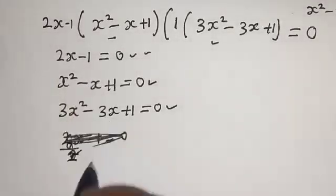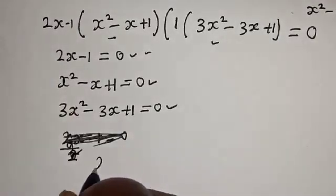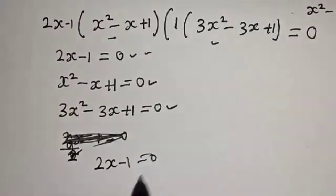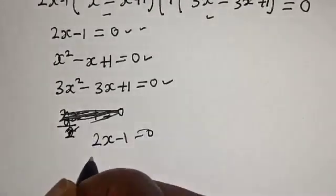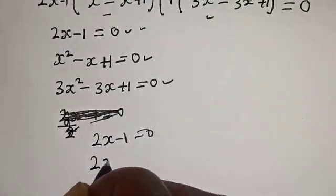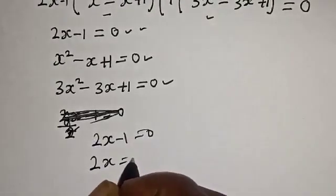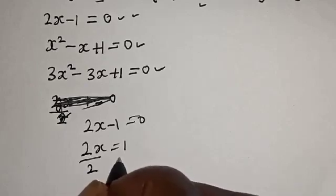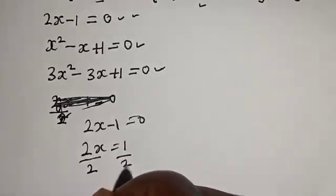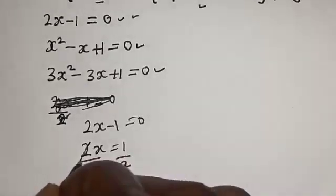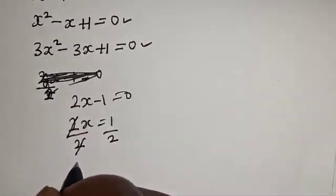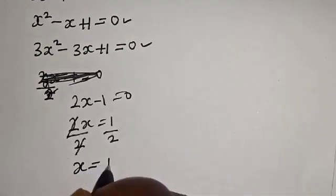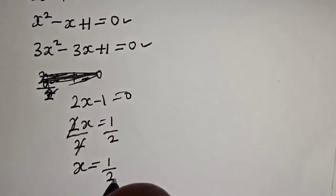From the first case, 2x minus 1 is equal to 0. Then 2x is equal to 1. Dividing both sides by 2, we get x is equal to 1 over 2. This is the only real solution.